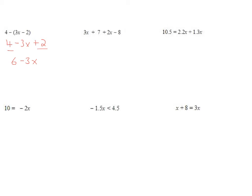For this next one, I have two terms with a single x in it, so I can combine those. And I have two numbers I can put together. The 3x and the 2x added give me 5x, and the plus 7 and the minus 8 combined give me a minus 1. Be careful on the sign with this particular problem.